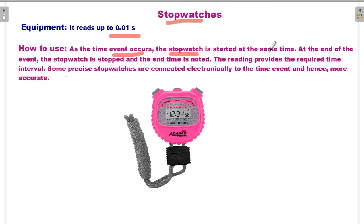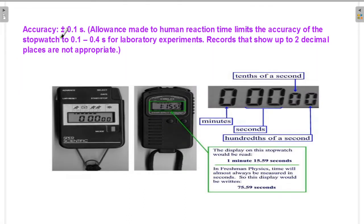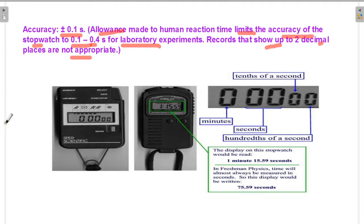As the time event occurs, the stopwatch is started at the same time. At the end of the event, the stopwatch is stopped and the end time is noted. The reading provides the required time interval. Some stopwatches are connected electronically to the time event and are hence more accurate. However, the allowance made for human reaction time limits the accuracy of stopwatches to between 0.1 and 0.4 seconds. For laboratory experiments, records should show up to two decimal places.